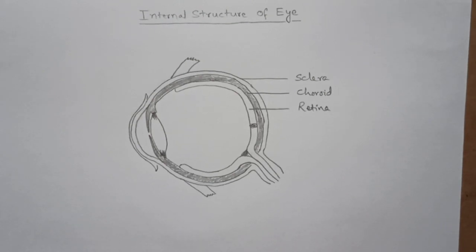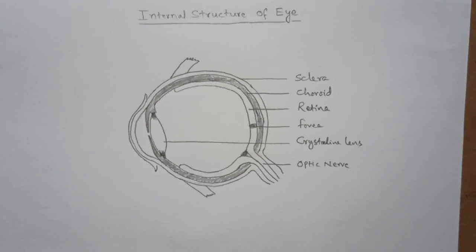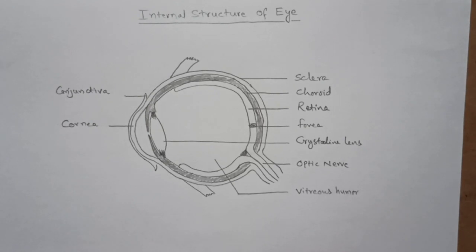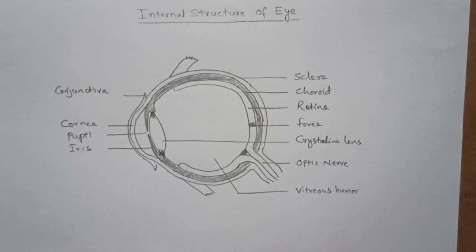Fovea or yellow spot or macula, crystalline lens, optic nerve, vitreous humor, conjunctiva, cornea, pupil, iris, aqueous humor.